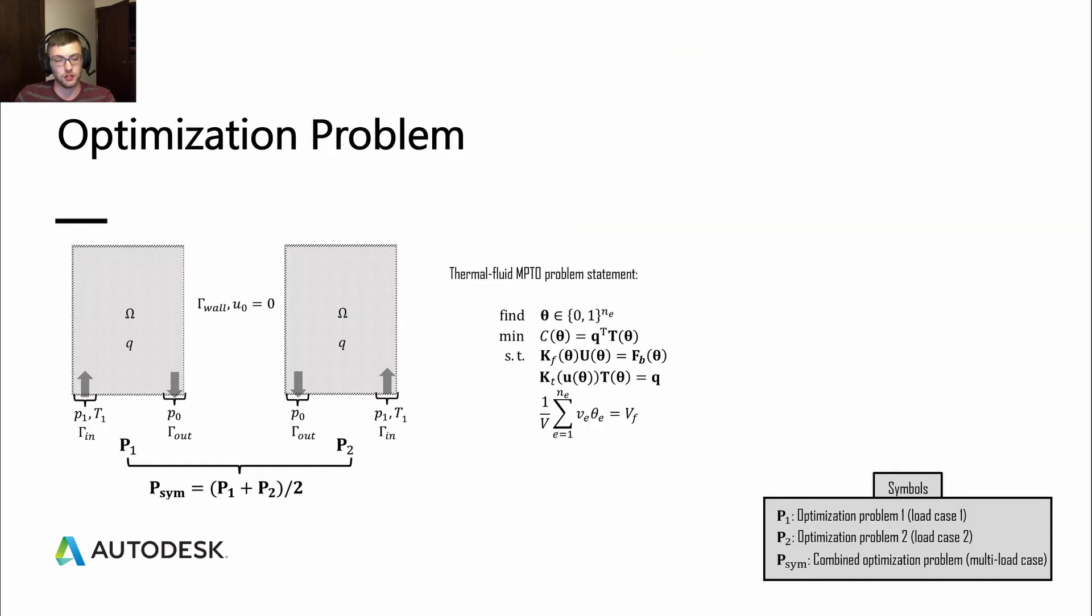The way we address that actually is through multi-load cases. We have problem one, this P1, where you have this inlet on the left, outlet on the right. You have problem two, where it's just the same flip-flopped, inlet on the right, outlet on the left. We can combine both of these to get a multi-load case symmetrical problem. We will be putting this through the same optimization problem statement that we had before with the other example.